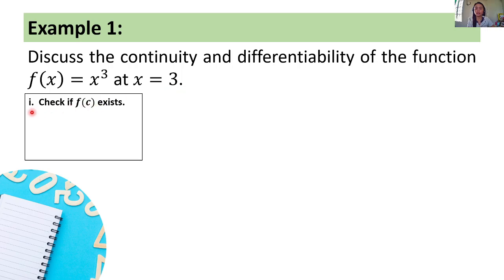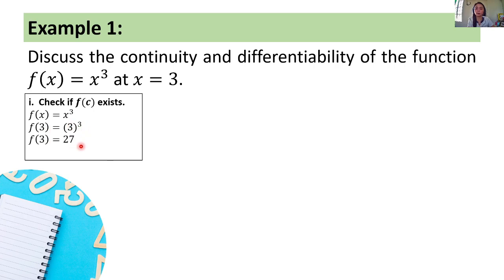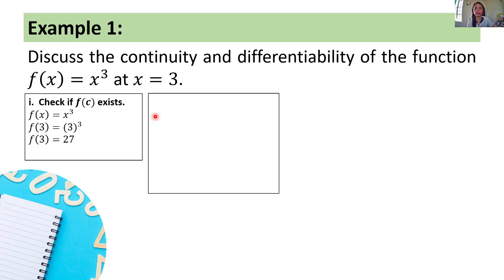Again, we'll check the three conditions. First, let's check if f of c exists. The function given is f of x equals x cubed, and our x is equal to 3. So we check f of 3, since c is 3. We get f of 3 equals 3 cubed, which equals 27, since 3 times 3 times 3 equals 27. Next condition: let's check if the limit of f of x as x approaches c exists.